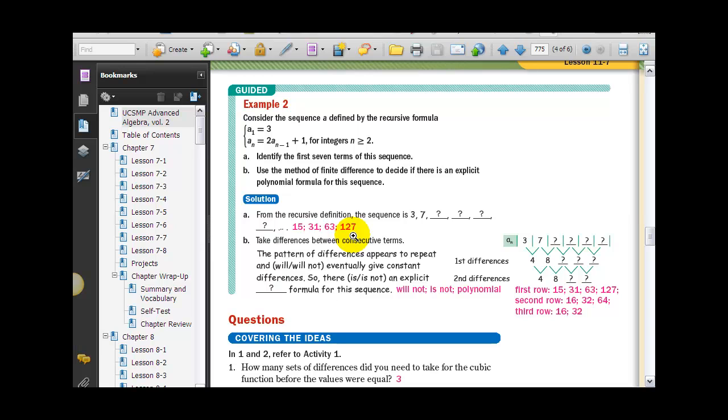And then in terms of the part B here, if I look at the first set of differences and the second set of differences, just like the previous example, the pattern between the differences kind of begins to repeat. So we had 4, 8, 15, 31, 63, 127 for the first set of differences, and then for the second row it was 16, 32, 64, third row 16, 32.